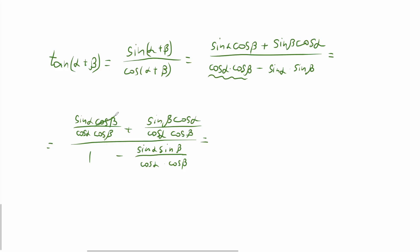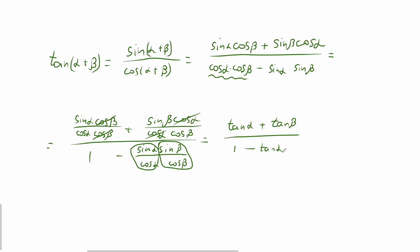Now let's simplify this expression. For the first term we can cancel cosine beta, and sine alpha over cosine alpha is just tangent alpha. For the second term we cancel cosine alpha, getting sine beta over cosine beta, which is tangent beta. The denominator becomes 1 minus the product of the two tangents: tangent alpha times tangent beta.